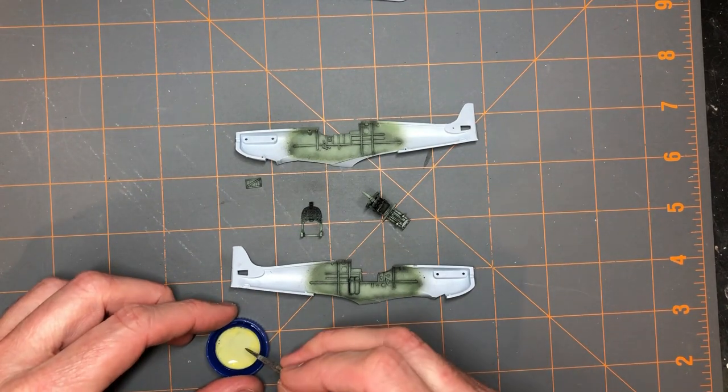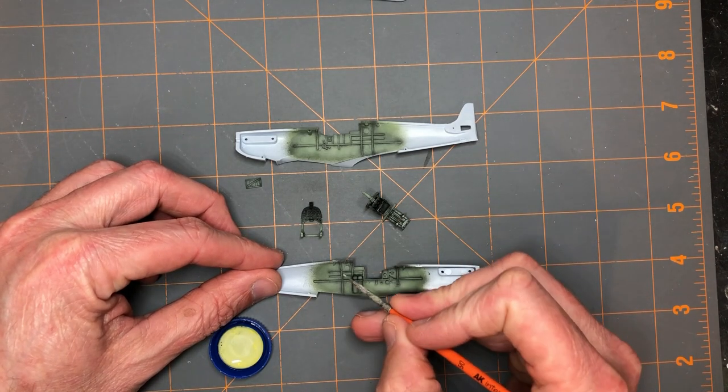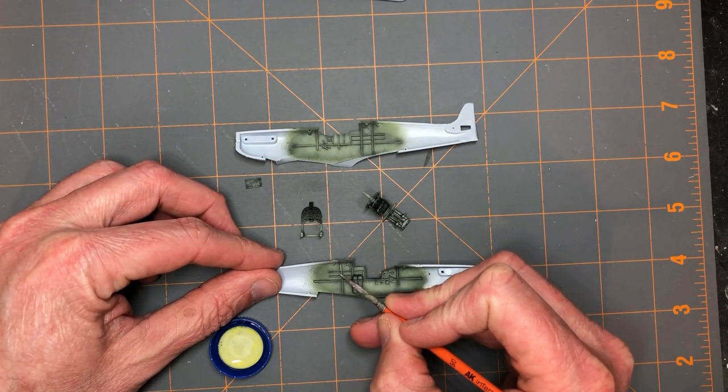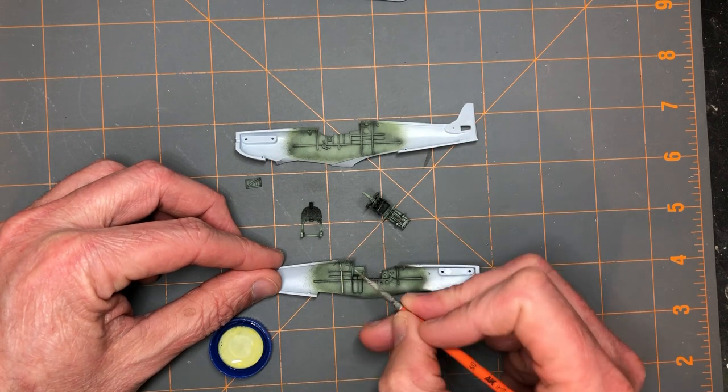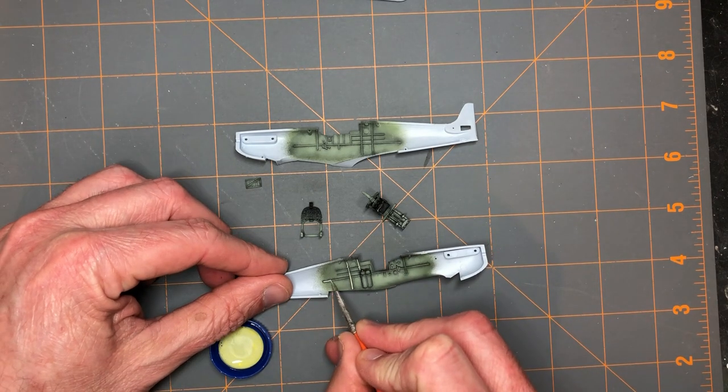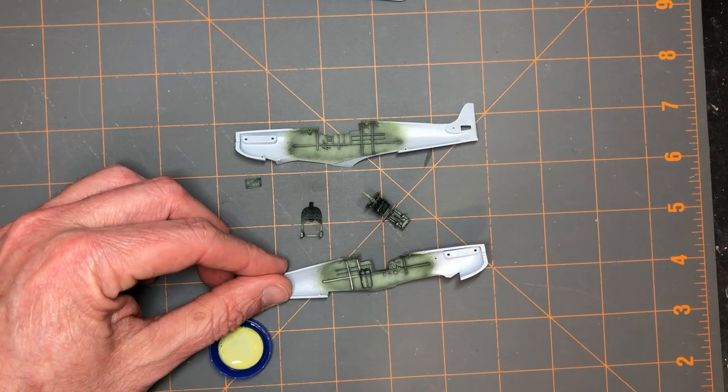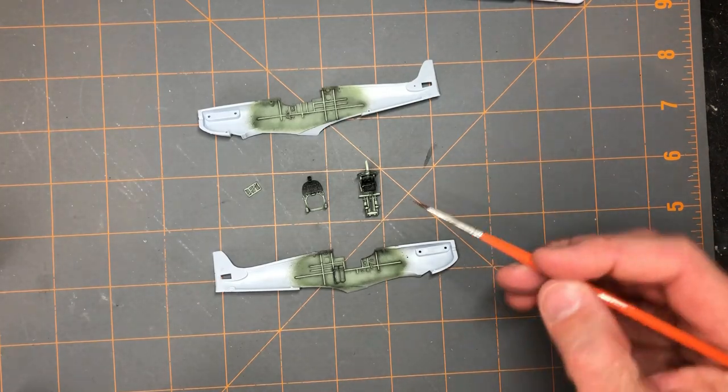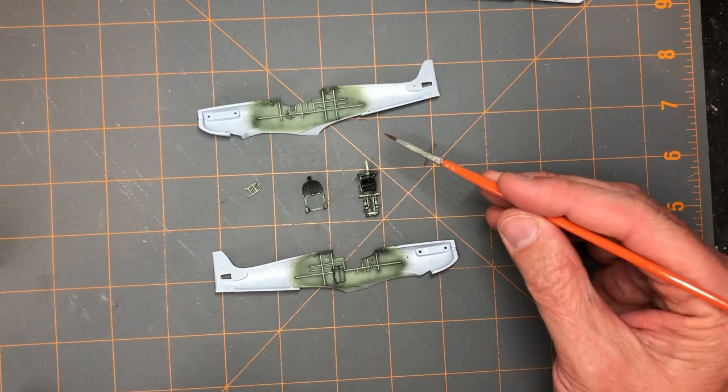Now I'll brush paint all the finer details. I'll just work through all the successive colors until I have all the cockpit parts painted.